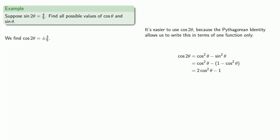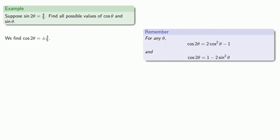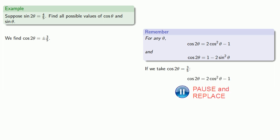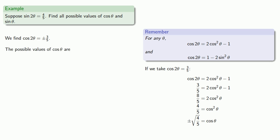But wait — there's more. If we replace cosine squared theta with one minus sine squared theta, we get a different value for cosine two-theta. So remember we have two possible values for cosine two-theta: plus or minus three-fifths. If we take cosine two-theta equal to three-fifths and substitute into our formula, we can solve for cosine of theta. Since we don't know anything about the quadrant, we have to leave cosine theta as plus or minus the square root of four-fifths.